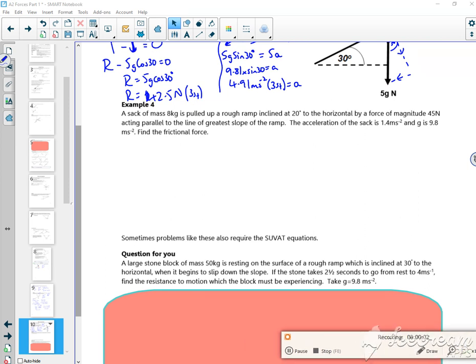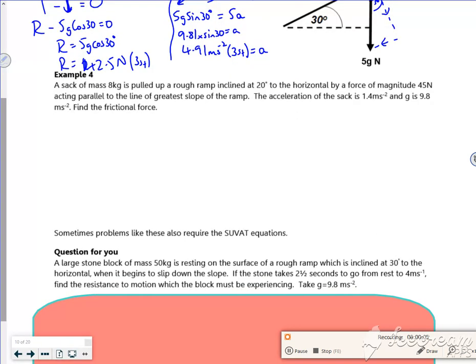Hi everyone, let's keep going with these examples. It says a sack of mass 8 kilos is pulling up a rough ramp at an incline of 20 degrees to the horizontal by a force of magnitude 45 Newtons acting parallel to the line of the greatest slope - so that's just parallel to the slope.